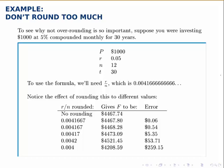Here's an example that illustrates why we avoid rounding as much as possible when we're doing the calculations for these compound interest examples. We'll illustrate by supposing that we invest $1,000 at 5% compounded monthly for 30 years. So we summarize: P is 1000, R is 0.05, N is 12, T is 30.